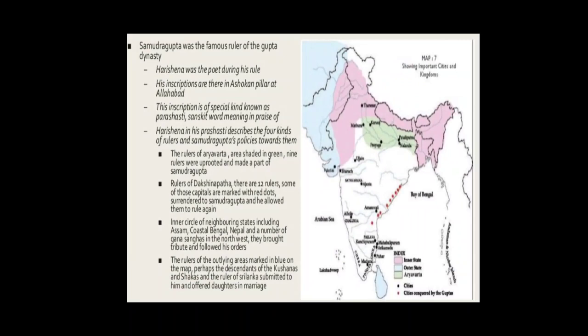If you look at Map 7, which is on page 105 in your history content book, you will notice an area shaded in green. You will also find a series of red dots along the east coast and areas marked in purple and blue as well. This map is based on the information provided in the Prashasti. Harishena describes four different kinds of rulers: the rulers of Aryavarta, the rulers of Dakshinapatha, the inner circle of neighbouring states including Assam, Coastal Bengal, Nepal, and a number of Gana-sanghas — in the north-west, marked in purple on the map — and the rulers of the outlying areas, marked in blue on the map.